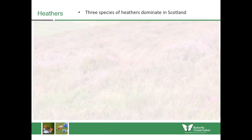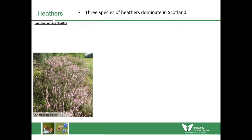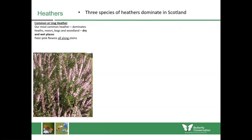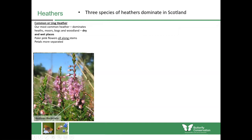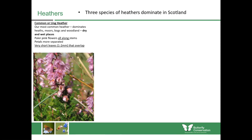Let's have a look at heathers first, because they dominate much of the uplands of Scotland and there are three main species. The first is called common or ling heather, found in a variety of habitats — heaths, moors, bogs and woodland — so it's found in both dry and wet places. The flowers tend to be pale pink, arranged all along the stems. The petals are quite separated, and the leaves are very short, only one to two millimetres long, and they overlap.